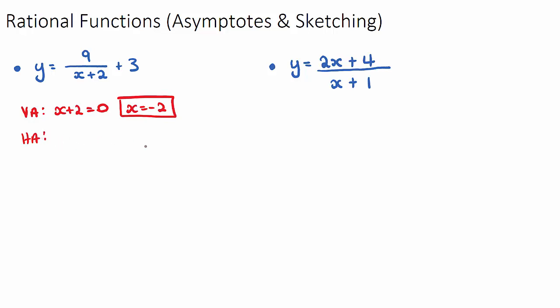The horizontal asymptote is a Y equals equation. We look at the fraction part of the function and check if there are any X's on the numerator. In this case there aren't, so the horizontal asymptote starts at Y equals 0. However, we need to consider any vertical shift — there's a plus 3 constant at the end — so our horizontal asymptote is Y equals 0 plus 3, which gives Y equals 3.